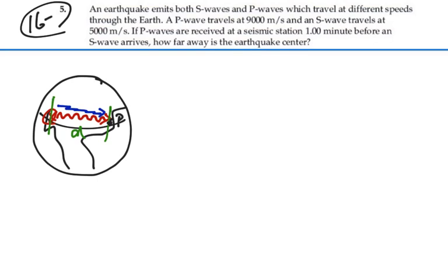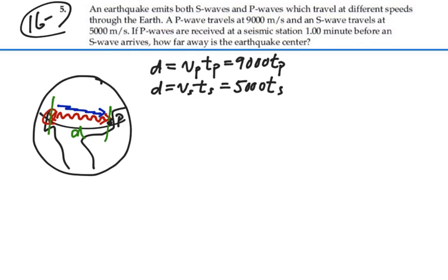So basically, we can say that that distance D is equal to the velocity of the P wave times the time of the P wave, or 9,000 times the time for the P wave. And that same distance D is equal to the velocity of the S wave times the time for the S wave, which would be 5,000 times the time for the S wave.